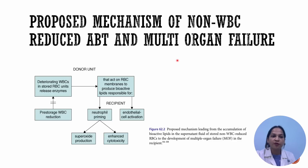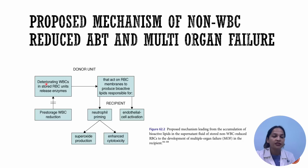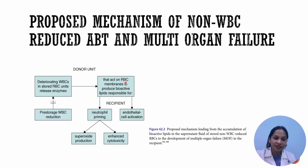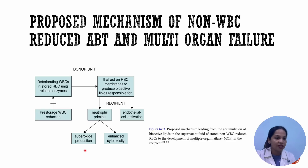This is the proposed mechanism of non-WBC-reduced allogeneic blood transfusion and multi-organ failure. When there is an allogeneic blood transfusion, deteriorating WBCs in the stored red cell units release enzymes. These enzymes act on the red cell membrane, predisposing them to the production of bioactive lipids. These mediators act on the endothelium, leading to inflammation and neutrophil priming, resulting in reactive oxygen species production and enhanced cytotoxicity. To avoid this, pre-storage leukocyte reduction can be performed so that there are no deteriorating WBCs in the red cell units.